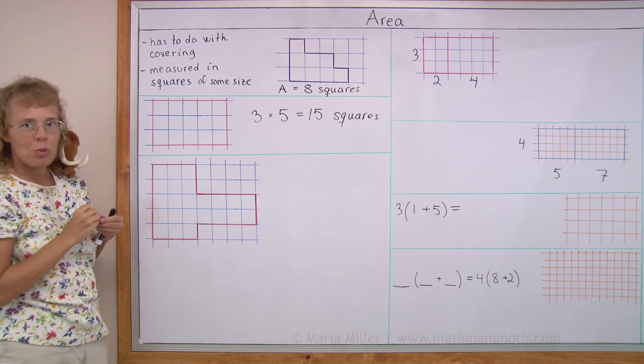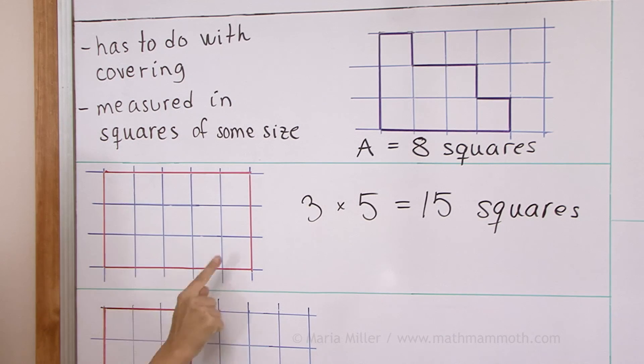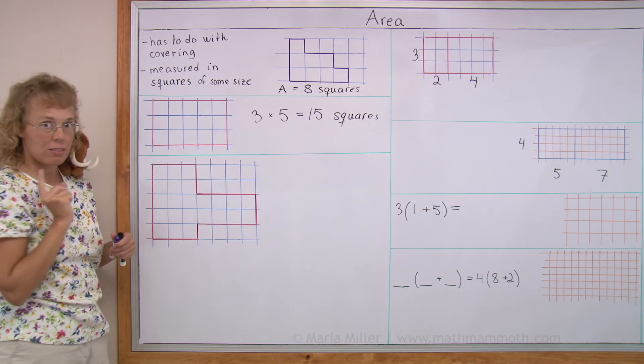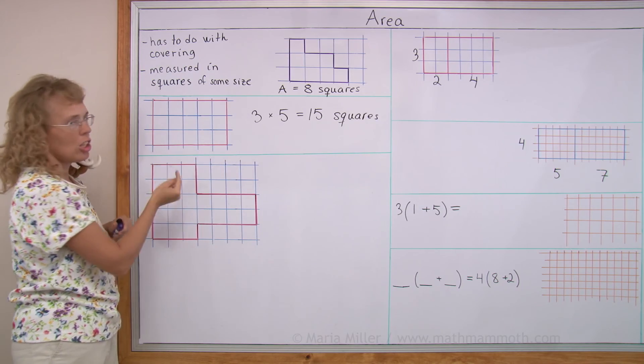When you're counting how many squares for multiplication, you're not counting all the squares. But you're counting how many rows and how many columns of squares there are. Okay? You count this as 1, 2 and 3. Right? And here you count 1, 2, 3, 4, 5. 5 columns of squares.